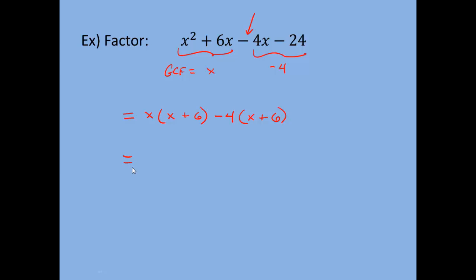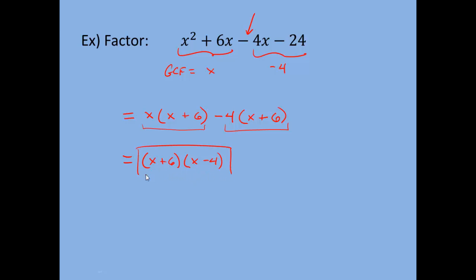Once we're here, we want to see what both terms have in common. This is all one term, and this is all one term, and they have x plus 6 in common — so that's our GCF that comes out front. We bring x plus 6 out to the front, and the second set of parentheses has whatever was left over: x minus 4. That gives us the factored form (x + 6)(x − 4). You could always check this by FOILing — distribute through and you'll get the original expression.